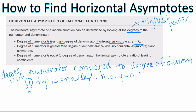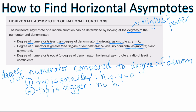The second thing that can happen is the degree of the numerator is greater than the degree of the denominator. In this case, there is no horizontal asymptote. So when the top is bigger, we have no horizontal asymptote. Let's finish this thought process of top is bigger, top is smaller, and top and bottom are the same.